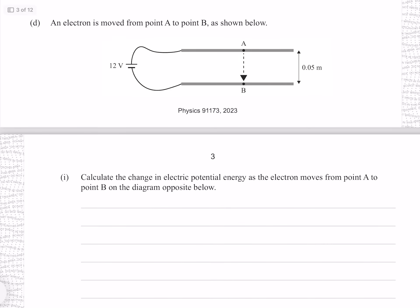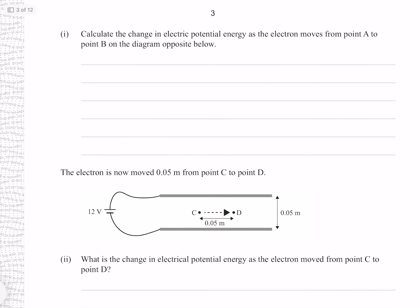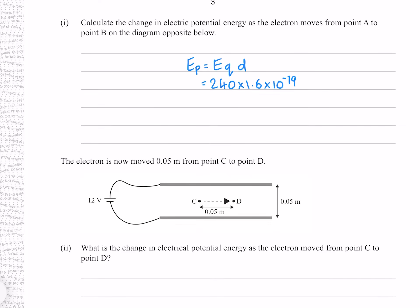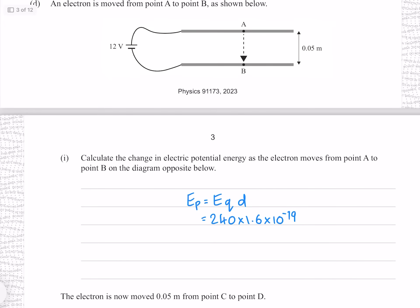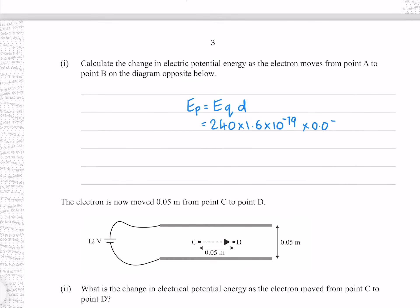An electron is moved from point A to point B as shown. Calculate the change in electric potential energy as the electron moves from A to B. Electric potential energy is given by the equation EQD, where we calculated the electric field strength to be 240, the charge of an electron is given on the formula sheet, and the distance moved is 0.05 metres. This gives 1.92 times 10 to the minus 18 joules, to three significant figures.